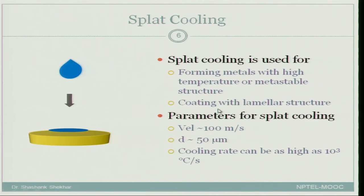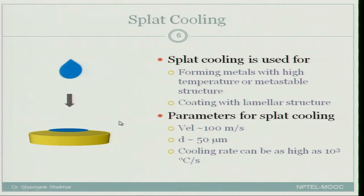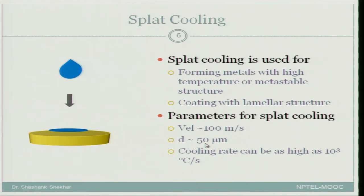Splat cooling is also used for coating. The droplets become lamellar on impact, and if you keep forcing droplets onto the substrate you get a thin lamellar layer. This layer greatly reduces the heat transfer coefficient, so it can be used as a thermal barrier coating — for example, in aeroplanes. The parameters are: velocity of the order of 100 metres per second, splash diameter of the order of 50 micrometres, and cooling rate as high as 10³ °C per second.